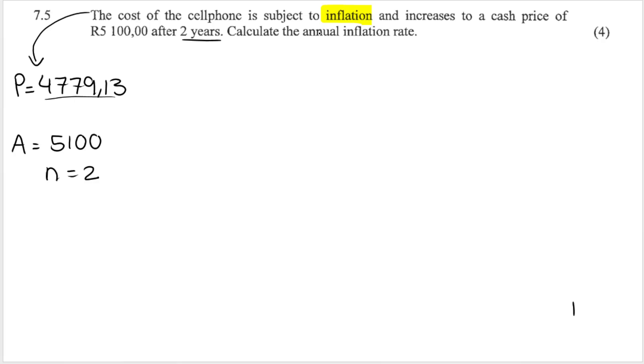They want me to calculate the annual inflation rate. They are looking for I, the interest rate, essentially. So, those are my variables. So, remember, we have to use the compound interest formula, which is this formula over here. So, you write your formula. You substitute in what you know. A is R5,100. P is R4779,13. That was given in the equation. It's the original cash price. We got one plus I is what I'm looking for, and N is two. Now, a lot of students will end up struggling to isolate the variable that we're looking for, to get I by itself. But you can already take comfort in the fact that writing and using the correct formula and substituting correctly gives you two out of the four marks, according to this memo.